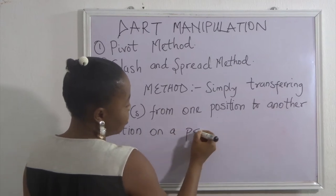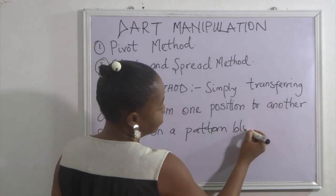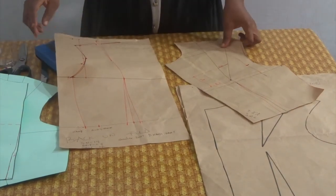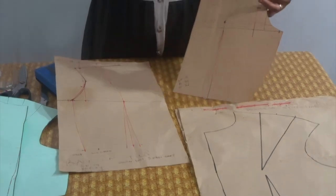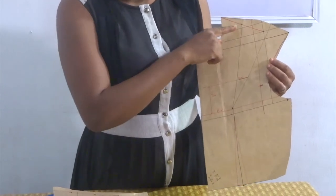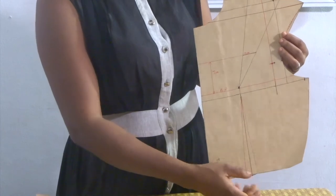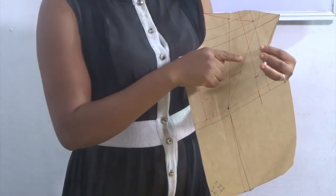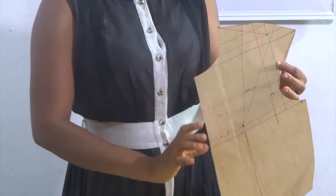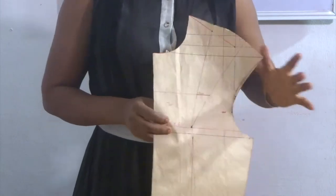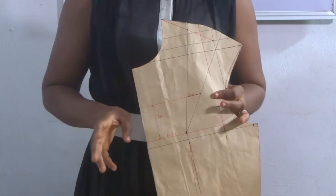This is done on a pattern block. Take for example this basic block pattern — the one we made in previous videos. It already has a shoulder dart and a waist dart. With the pivot method, you can transfer this dart to any other position on the body and it will still give you the same effect of shaping the upper region. There are different ways you can pivot your dart.